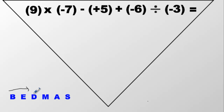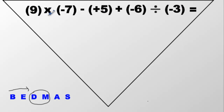Once you get to division and multiplication, whichever one comes first, you do first. How do you decide which one comes first? You go left to right in the equation — you see which one comes first. Here it's multiplying first, dividing is last, so you do that in that order.